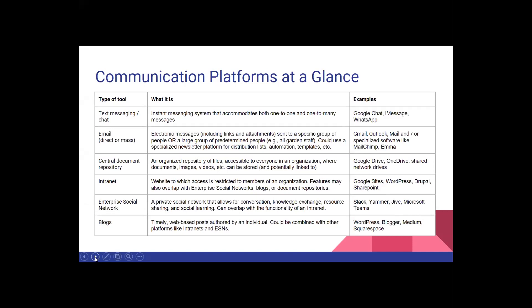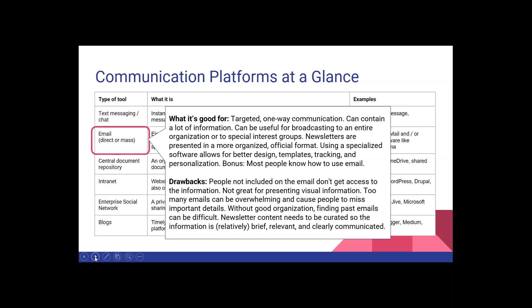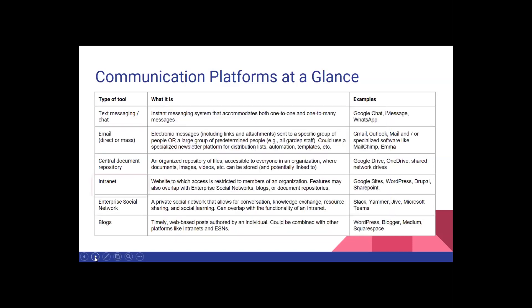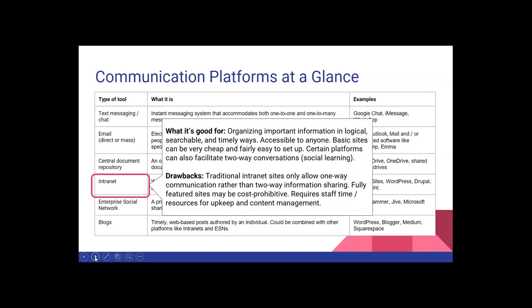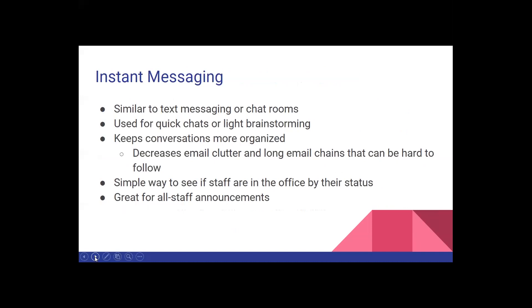Here are two examples of platforms you might already have in place. Email is good for targeting one-way communication, but not all people can access their email at all times. An intranet is a private network accessible only by authorized users — an example is Microsoft SharePoint. An intranet can include calendars, project timelines, task lists, and messaging. Free instant messaging apps like Skype or Slack can also be used, or they can be part of other project management software such as Asana.